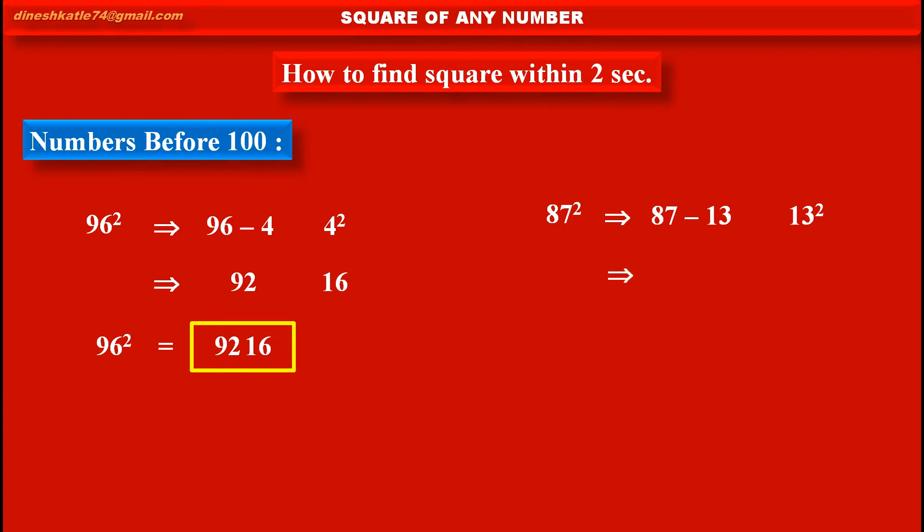Therefore, solving the above, we get 87 minus 13, that is 74. And in second part, 13 square, that is 169.